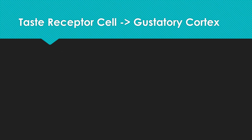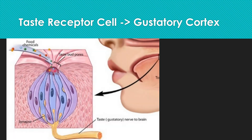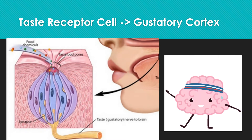Now let's look at an example. Let's say you go trick-or-treating, and you end up with a whole bunch of Warheads. You throw them all in your mouth. Well, by doing so, you've just activated your sour taste cells. These taste cells will then send information to the gustatory cortex of the brain, saying: I just tasted something really sour.